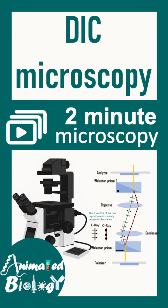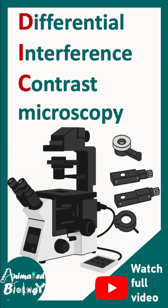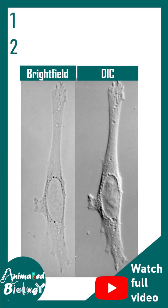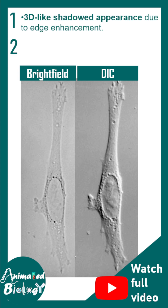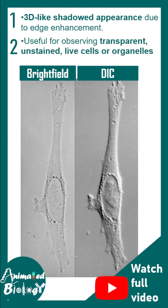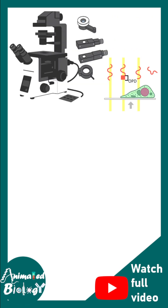Welcome to the two-minutes microscopy playlist. In this installment, we'll talk about differential interference contrast microscopy — a type of light microscopy which gives a pseudo-3D appearance for cells and specimens which are transparent. This is useful to observe transparent, unstained, live samples and the organelles inside them. You can see two images, bright field and DIC, side by side — DIC looks much more 3D and much more detailed compared to the bright field.